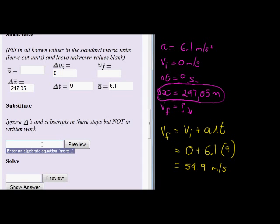Let's do our substitution step. Velocity, again, just make sure, ignore any deltas and subscripts in these steps. So instead of putting future velocity, I'm just going to put velocity is equal to, and now for initial velocity, 0 plus A is 6.1 times delta T is 9 seconds. Let's preview.